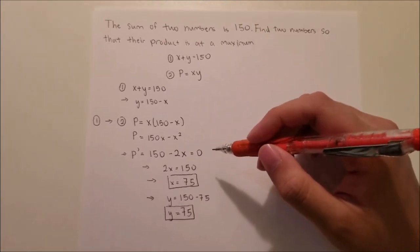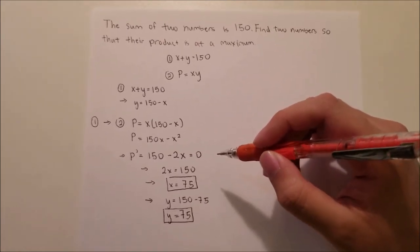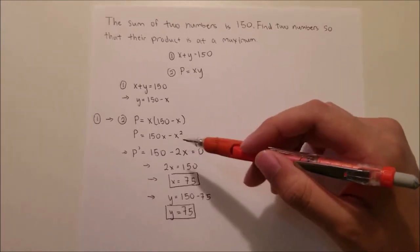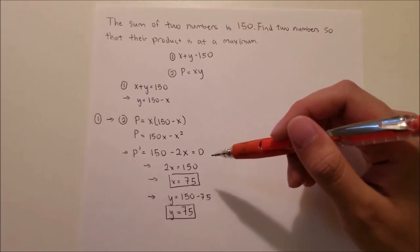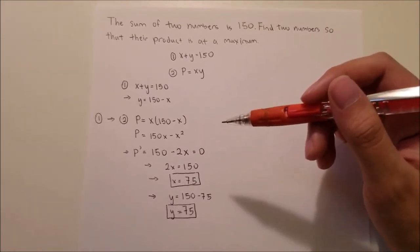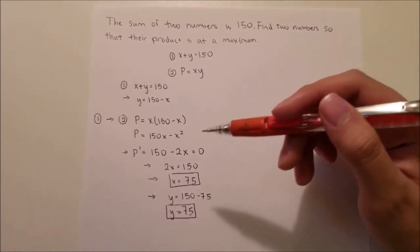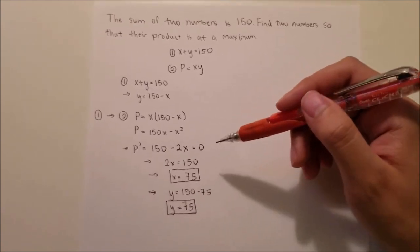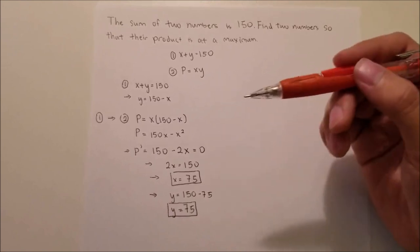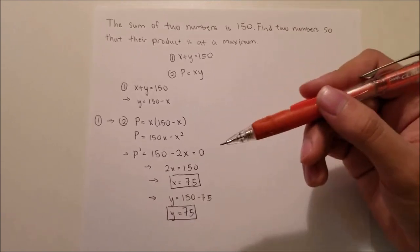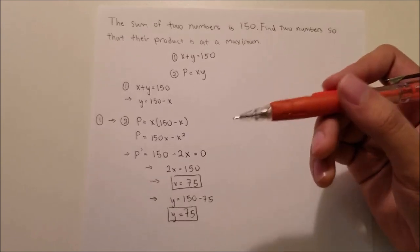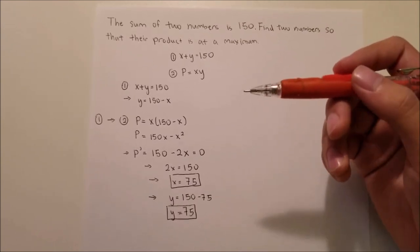The next step in optimization is to take the derivative of both sides with respect to your one variable which is x in this case. You want to take the derivative so you can get the rate of change of the function p in this case and set it to zero. When the derivative is at zero, it's called a critical point. And at critical points is when the function is at its maximum or minimum.